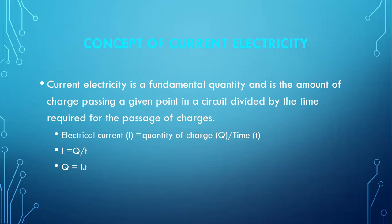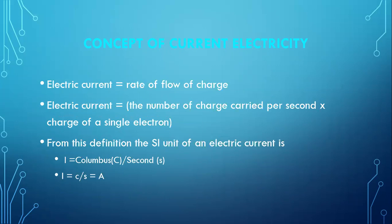From there, electric current equals rate of flow of charge. Direct electric current equals the number of charges per second times the charge of a single electron. From this definition, the unit of electric current is obtained as coulombs per second.